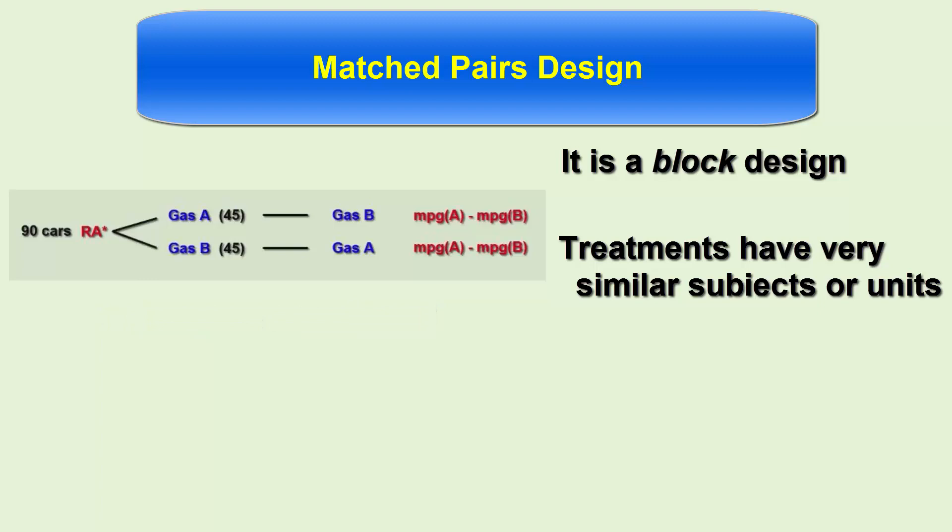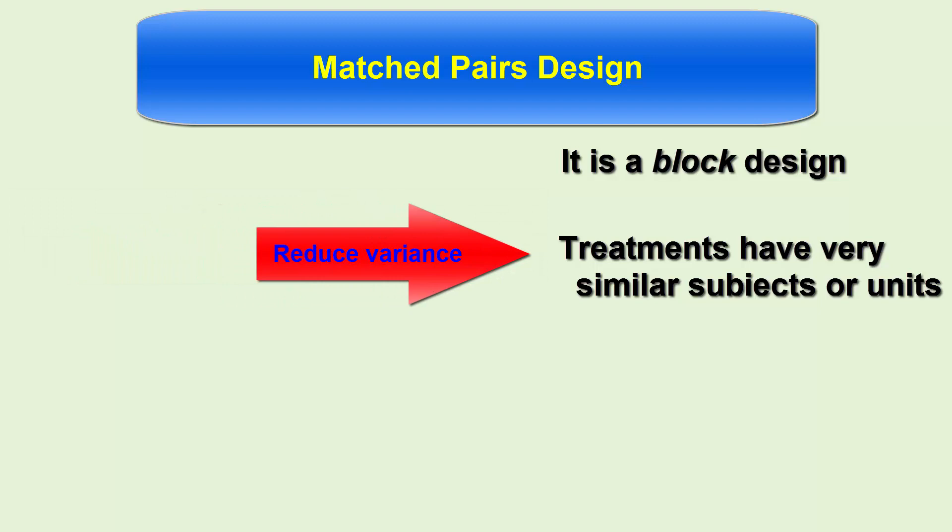It's better if we simply strive to create the most powerful experiment possible. And this typically happens when we reduce variance by making the treatment groups as similar as we can.